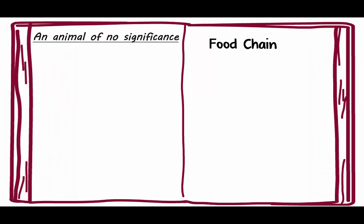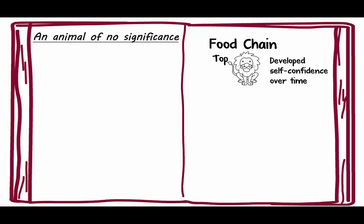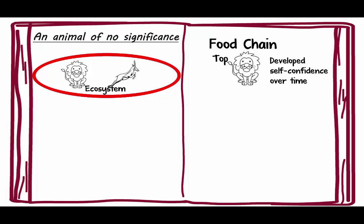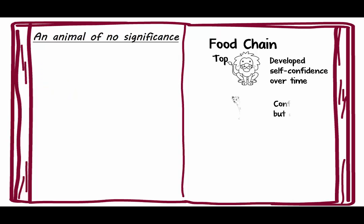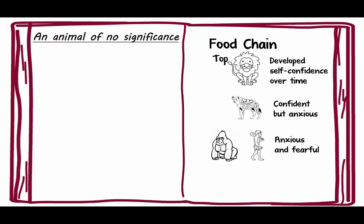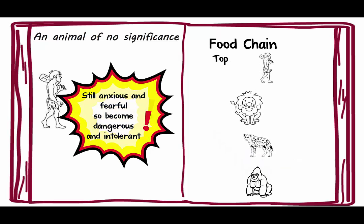One of his big issues is what he calls an animal of no significance. Normally the animal that reaches the top of the food chain has developed self-confidence over time, and the ecosystem itself adapts — the gazelle learned to run faster as the lion became the top of the food chain. But Homo sapiens suddenly popped up to the top of the food chain while still being anxious and fearful, and that anxiousness and fearfulness made them dangerous and intolerant. So part of our personalities that make us dangerous and intolerant is due to how fast we moved up to the top of the food chain, according to Harari.